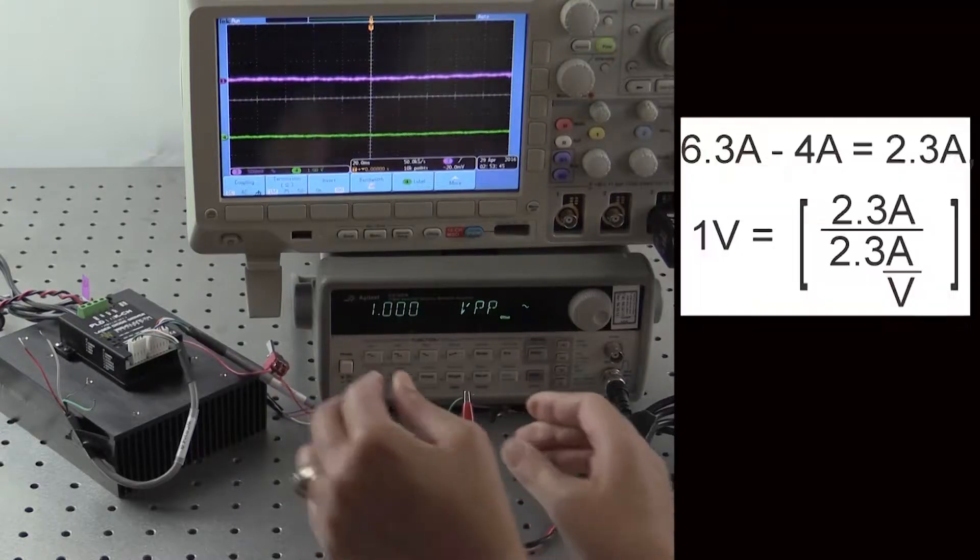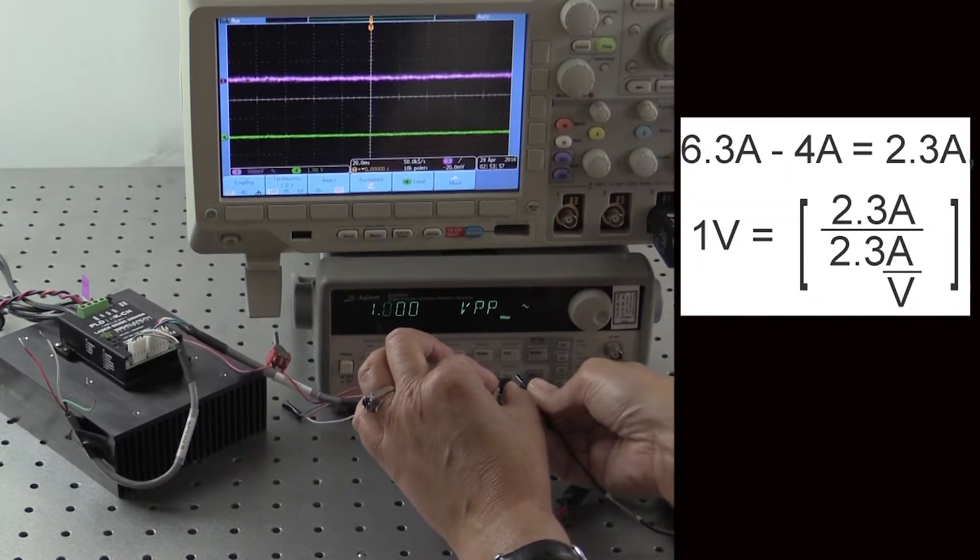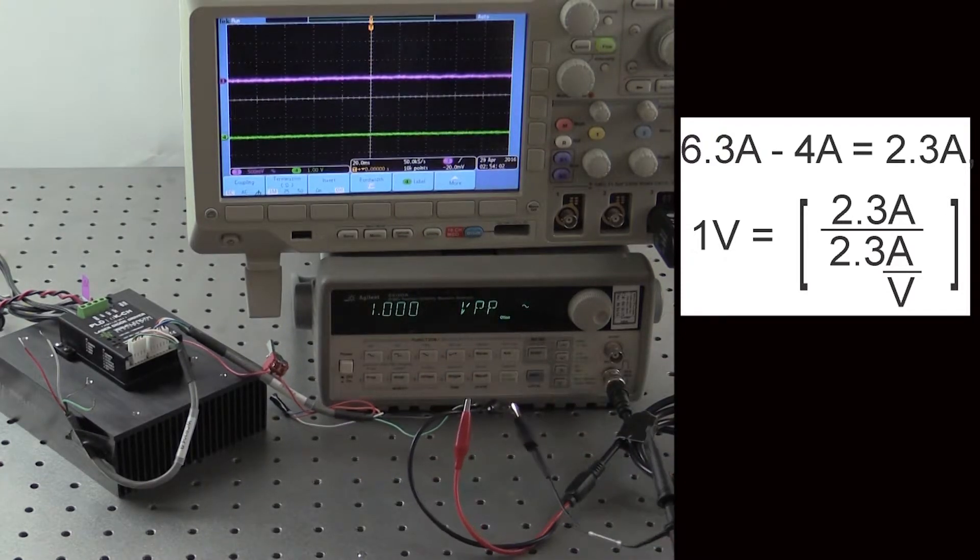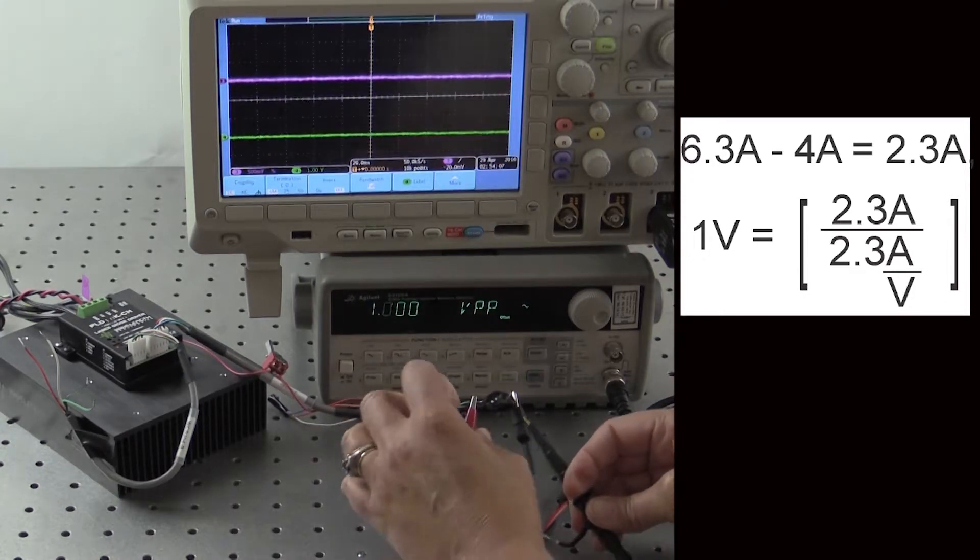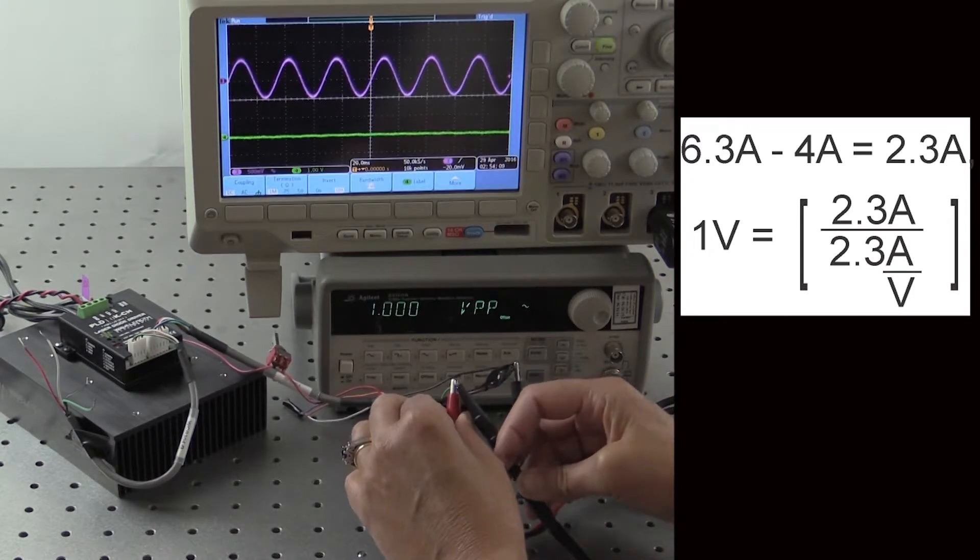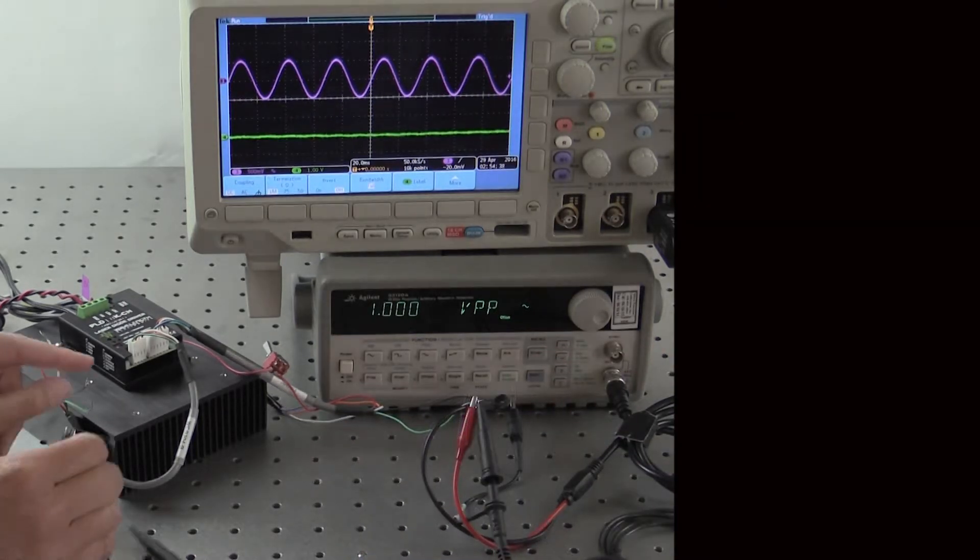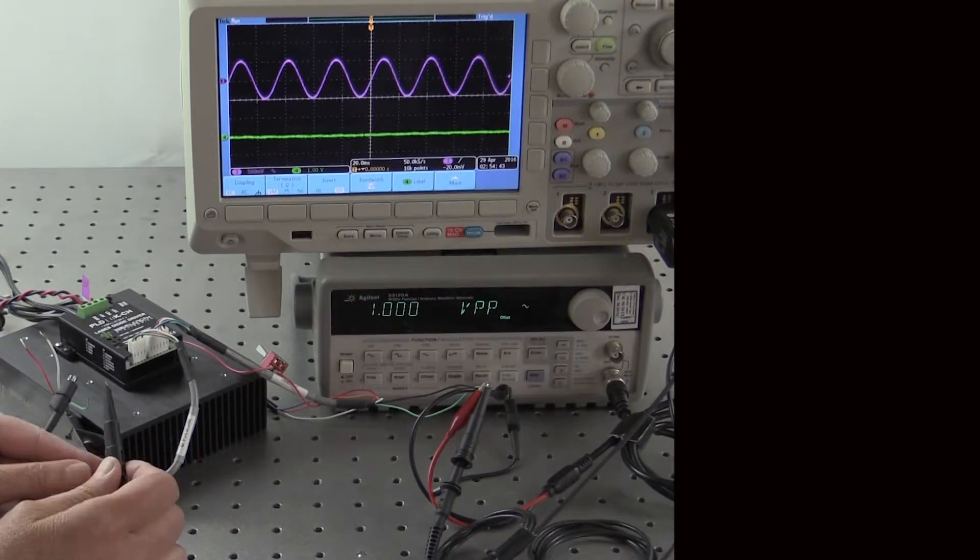For this example, the modulation transfer function in constant current mode is 2.3 amps per volt. We want to vary our current from the DC bias of 4 amps to 6.3 amps at 30 hertz. We set our function generator to produce a 1 volt peak-to-peak signal at 30 hertz. We attach an oscilloscope across the imon and ground pins to see the variation.